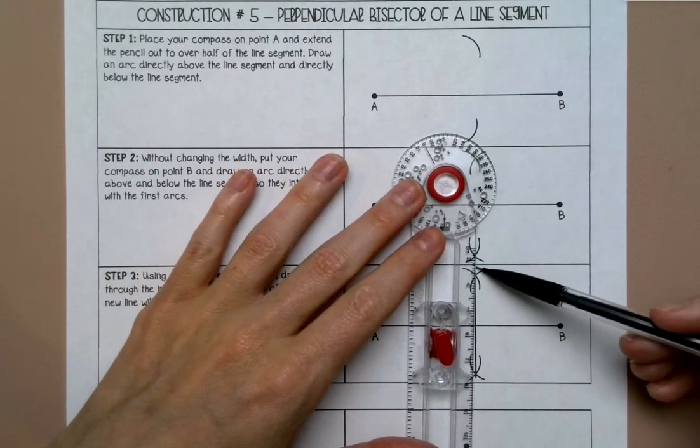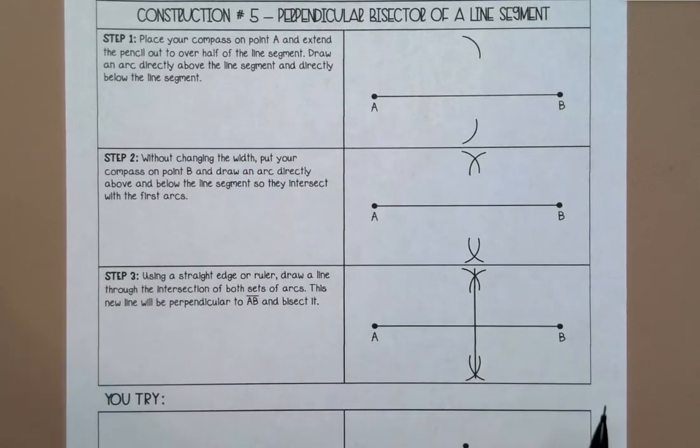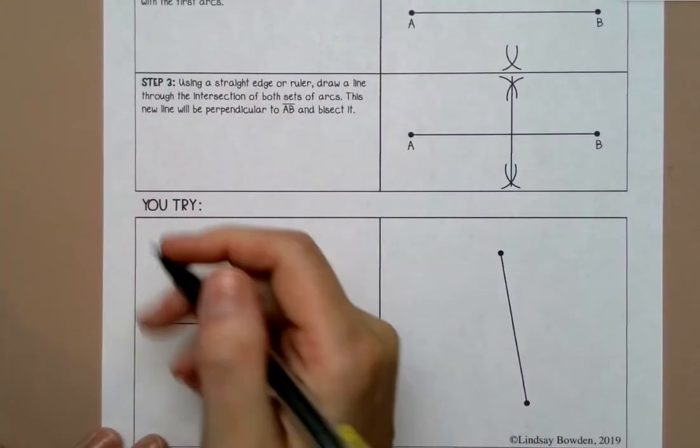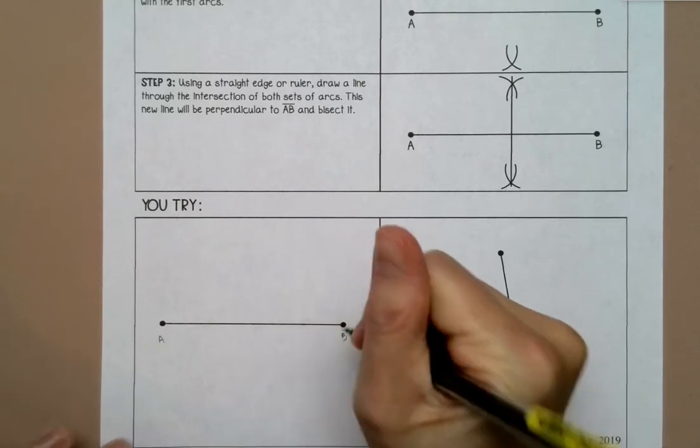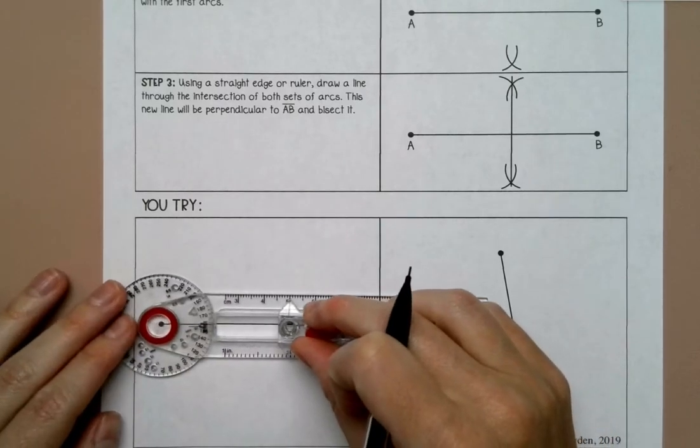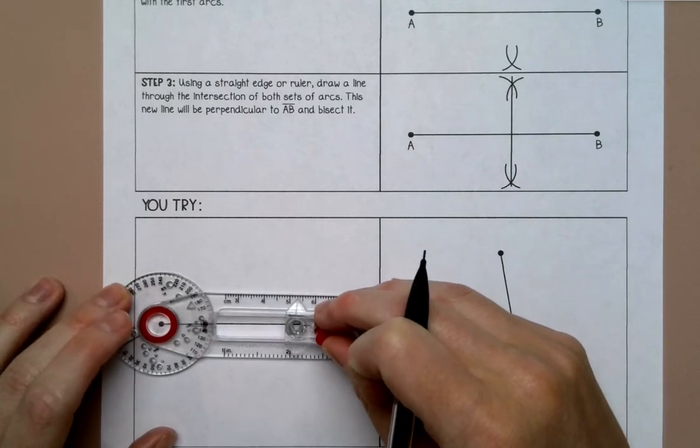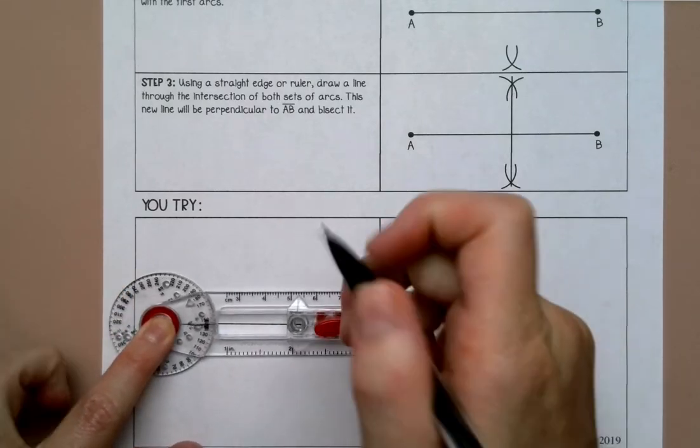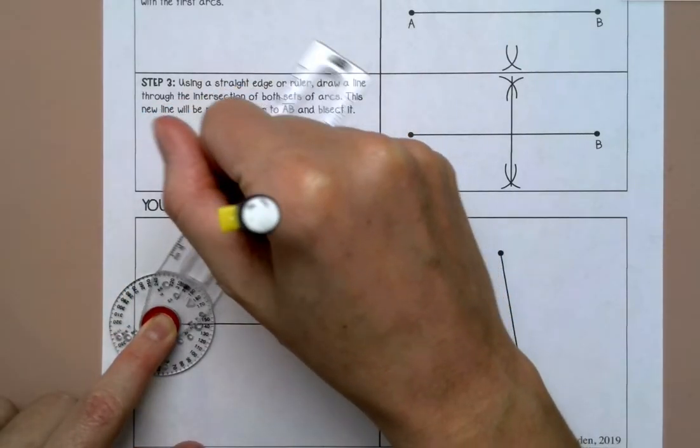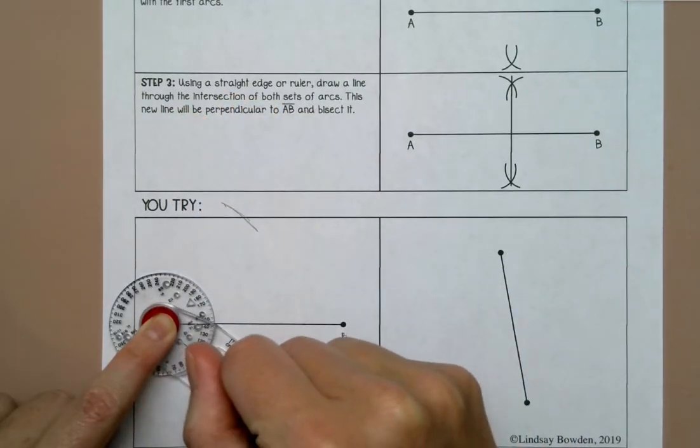And then where those two arcs meet, I'm going to draw my line. Okay, so I'm going to call this A and this B. I'm going to set my compass to over halfway. I usually do about three-fourths of the way, and I'm going to draw an arc above and below.